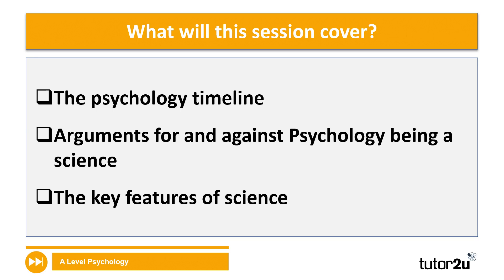In this part of the lesson, we'll take a look at the psychology timeline and the approaches you need to be familiar with for paper two, arguments for and against the claim that psychology is a science, and some of the key features of science as well. In later sessions, we'll apply these to a broader approach in psychology.